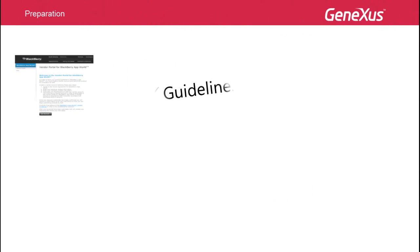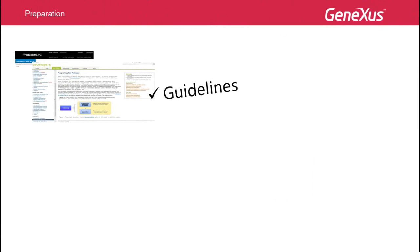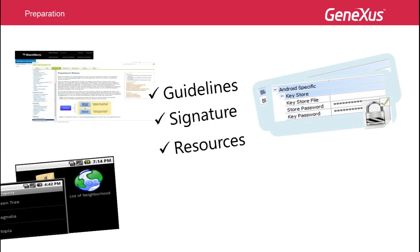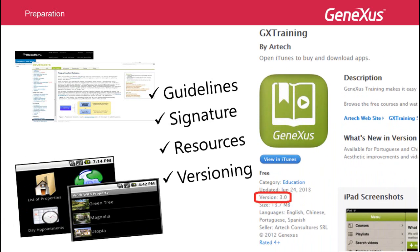The second stage is the preparation of the application — that is, following a number of steps to achieve a successful publication. These steps include reviewing the documents provided by virtual stores in relation to design guides in order to avoid the application being rejected, signing the compiled pack corresponding to the application, obtaining the necessary resources such as images, icons, and screen captures, which will be requested at the time of publishing. And versioning the application, which implies having a version number for each application that will be modified according to whether it's a first version or an update.